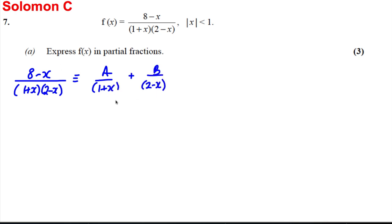Now we're going to cross multiply this side so it has the common denominator 1 plus x times 2 minus x. And we're going to say that 8 subtract x is therefore equal to a times 2 subtract x plus b times 1 plus x. We're going to do a substitution. We're going to let x equal 2. And 8 subtract 2 is 6. This will disappear and we'll get 3b. So therefore b must be equal to 2.